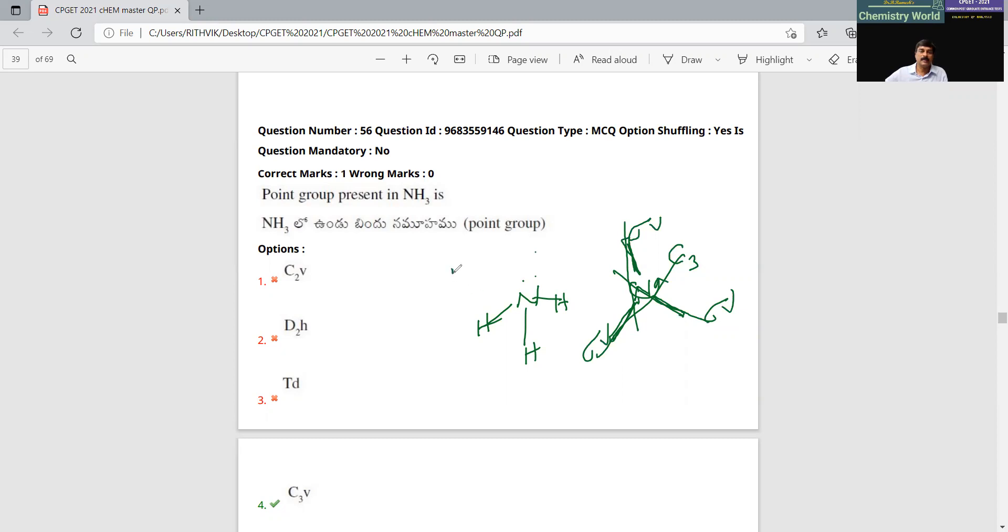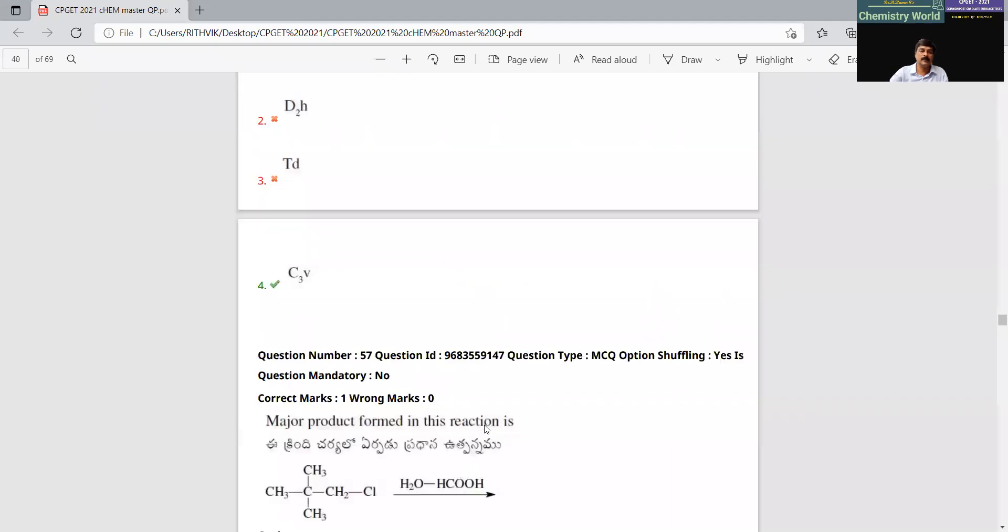Therefore, C3 plus 3 sigma v, that is Cn plus n sigma v equals to Cnv point group. Therefore, it is C3v point group. C3 plus 3 sigma v will result in C3v point group. The ammonia molecule belongs to C3v point group.